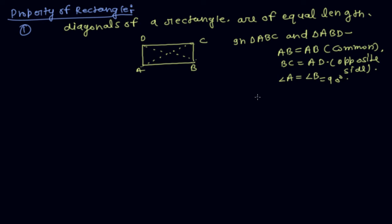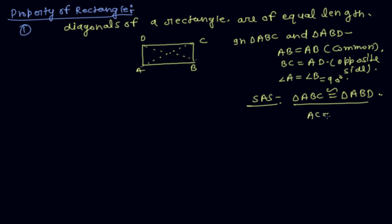Then by the SAS (side-angle-side) rule, triangle ABC is congruent to triangle ABD. Therefore AC is equal to BD. So the diagonals of a rectangle are of equal length.